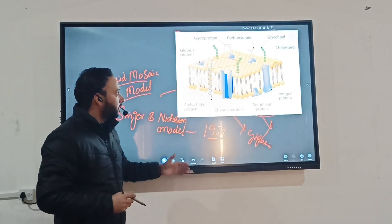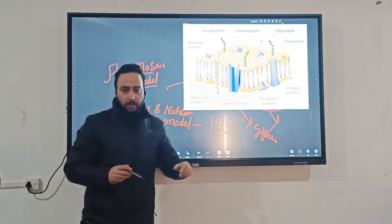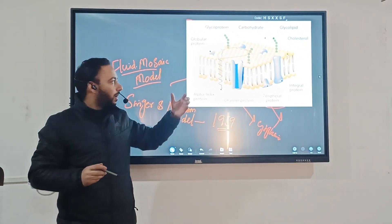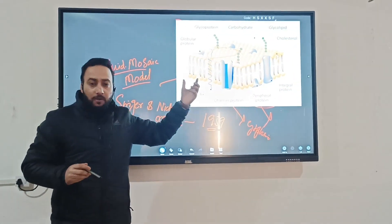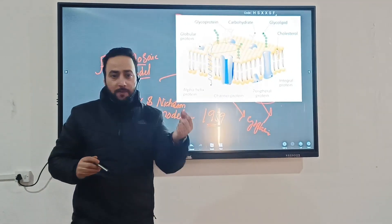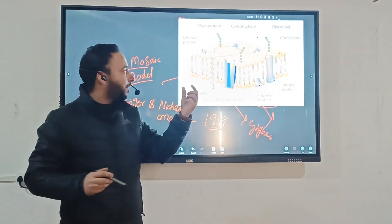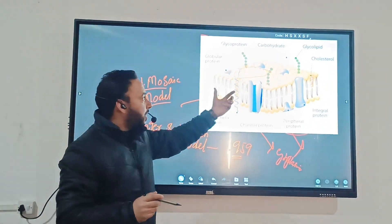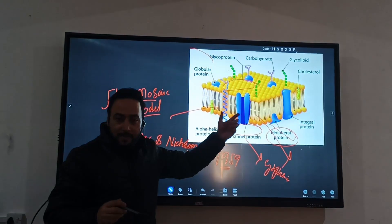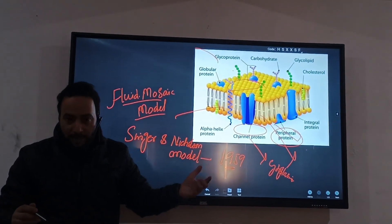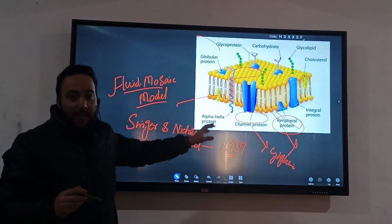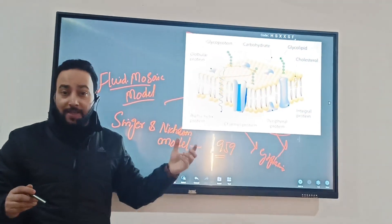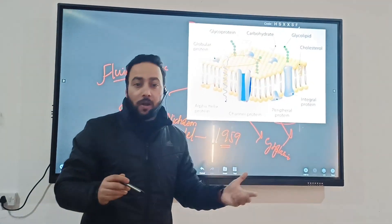Now different kinds of proteins are here. Some proteins on the external surface we call them as peripheral proteins. They are bound with carbohydrate moiety, we call them as glycoproteins, and some are with lipids, glycolipids.